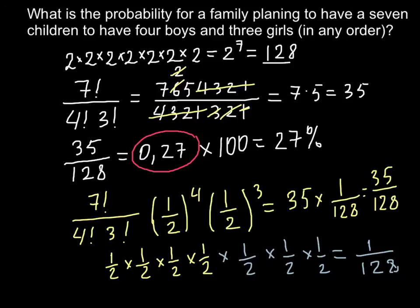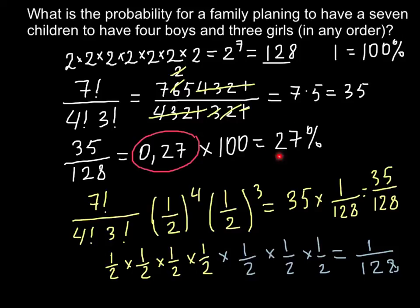To understand why we multiply by 100: we have 128 different variants. If we put 128 over 128 we get 1, meaning 1 equals 100 percent. We have 35 chances out of 128, and that number is roughly one quarter of 128, which is why the answer is about 27 percent.